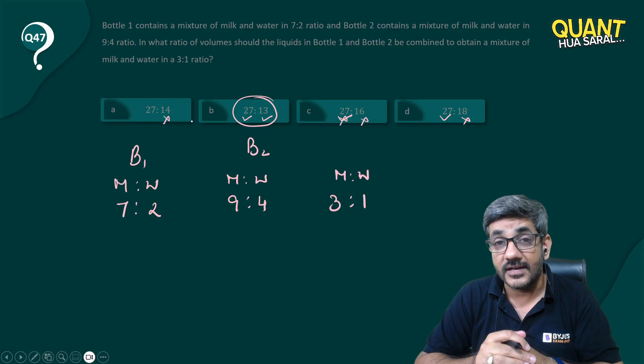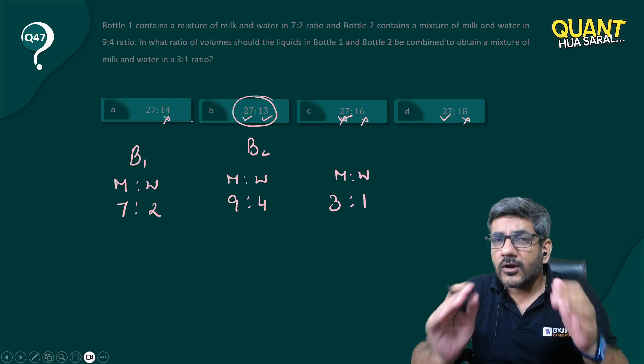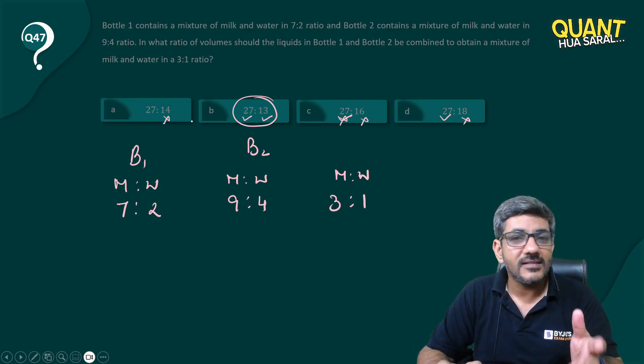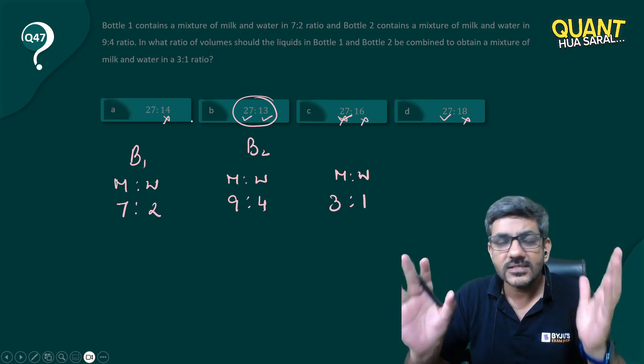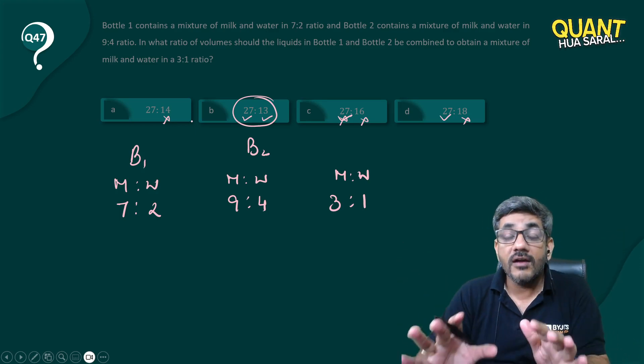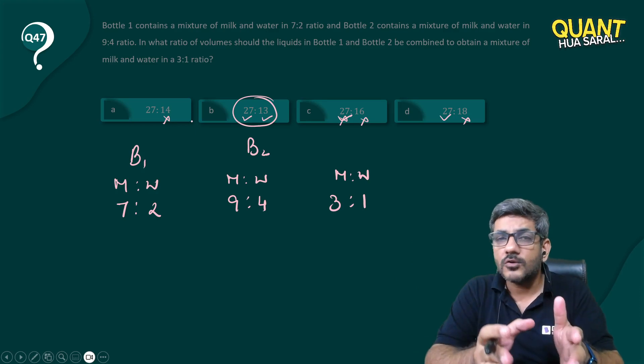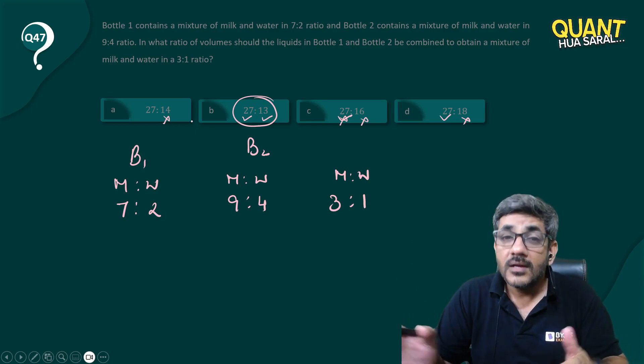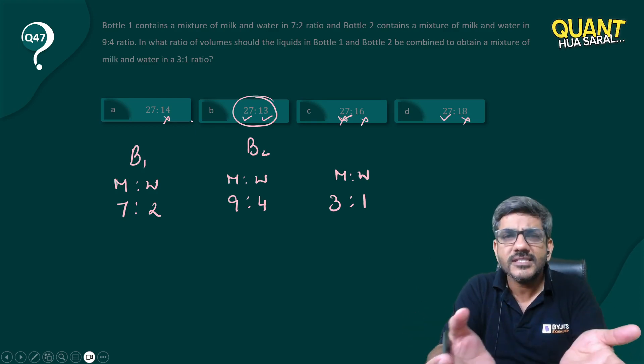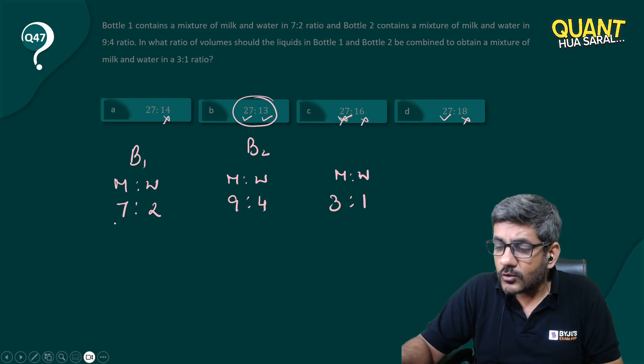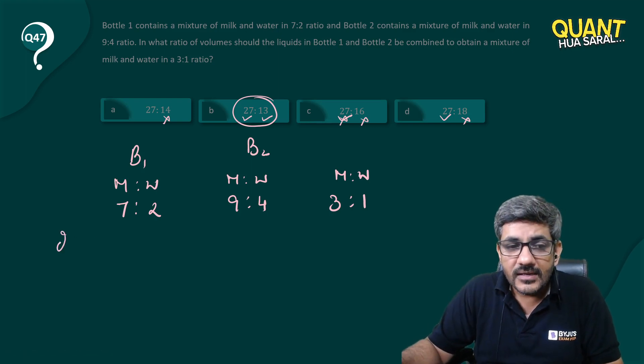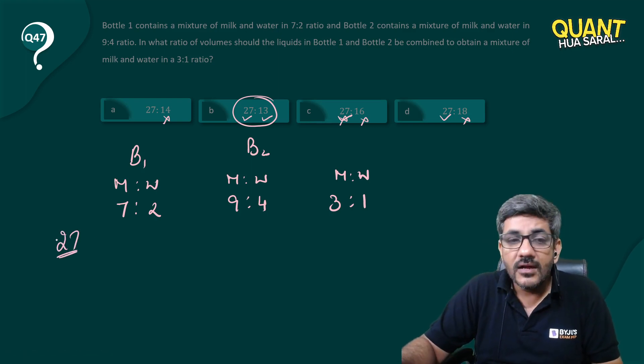So 99% chance this is going to satisfy. Just because of that 1% I'm saying check it, otherwise I would have straight away marked it. If you have a paucity of time, just mark 27:13 and move ahead. But if you have time, let's check. What if I take 27 liters from here? That 27 liters would have how much milk and how much water?